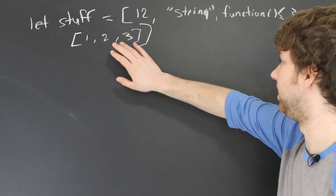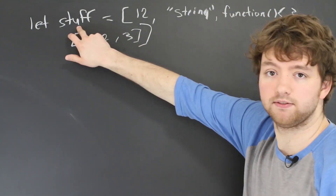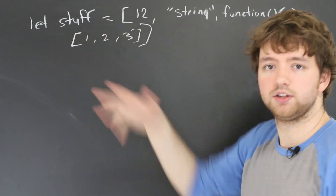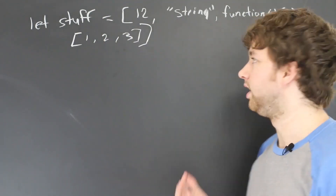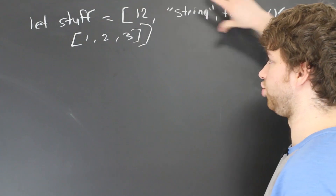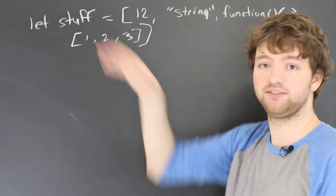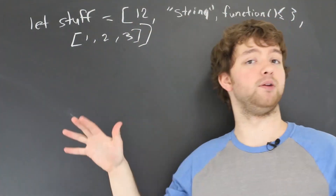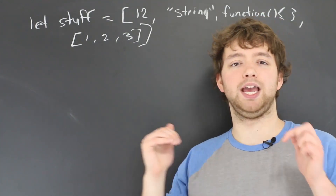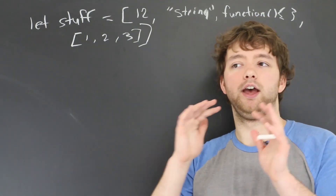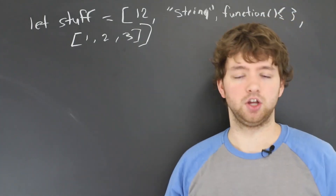The only way to get to a nested array would be through the parent variable 'stuff.' Typically, when you're using multi-dimensional arrays, it's not going to be just a bunch of junk thrown into a variable. That's a very bad thing to do. More than likely, there's going to be a structure where every single item has some kind of meaning.